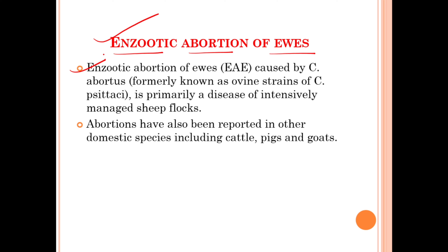Enzootic abortion of the ewes, or EAE, is caused by Chlamydophila abortus, formerly known as the ovine strain of Chlamydophila psittaci, and is primarily a disease of intensively managed sheep flocks.